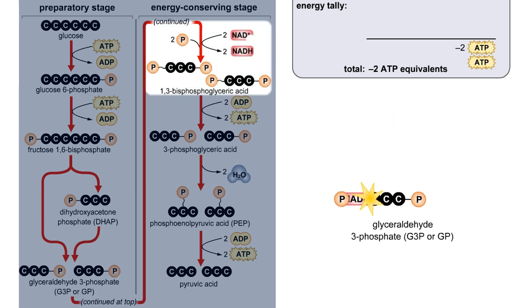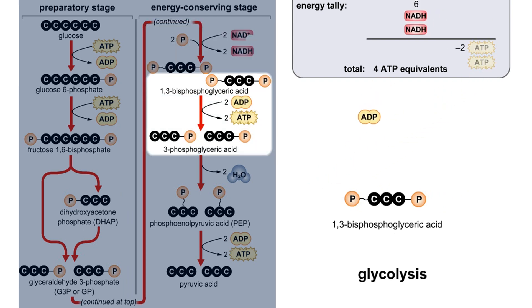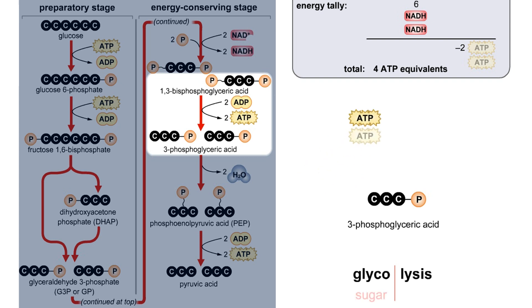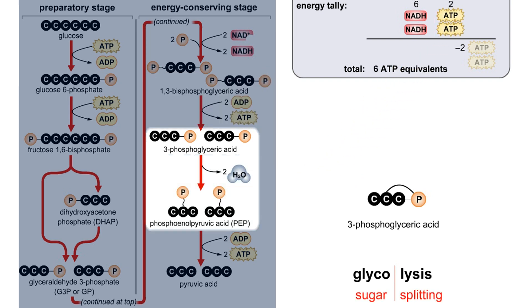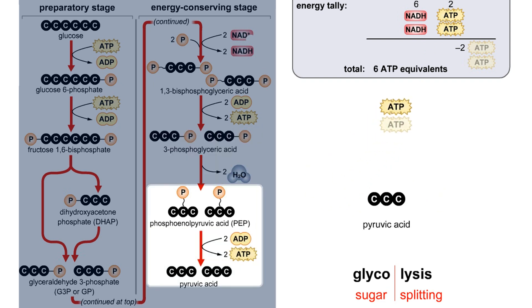The metabolic pathway for the breakdown of glucose is called glycolysis, from the Greek glukous for sweet or sugar, and lysine for loosening or breaking apart. Glycolysis is also sometimes called the Emden-Meyerhoff pathway, after its discoverers.